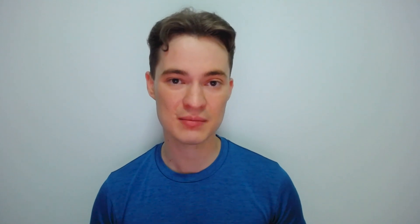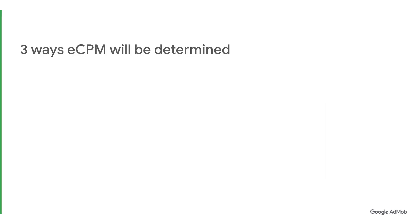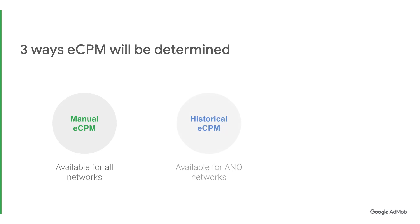Now that you understand the value of AdMob mediation, let's dive in to find out how it works. AdMob mediation uses a concept called waterfall that prioritizes ad networks based on their eCPM performance. There are three ways CPM value can be determined: one, manual eCPM; two, historical eCPM; and three, real-time eCPM.